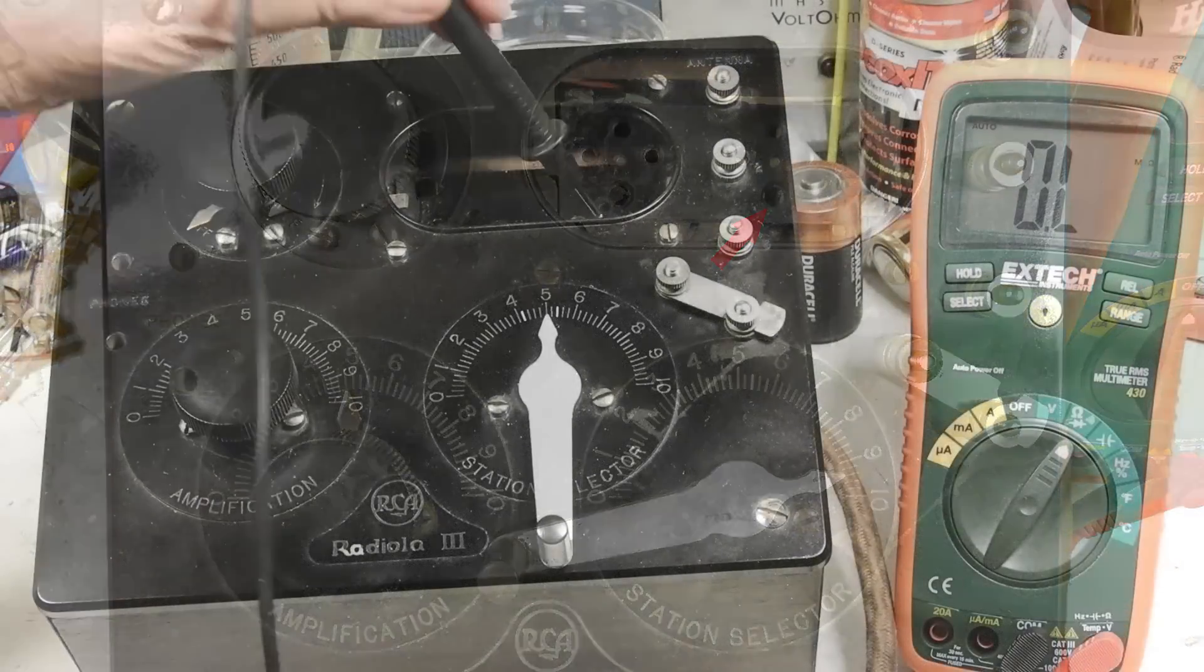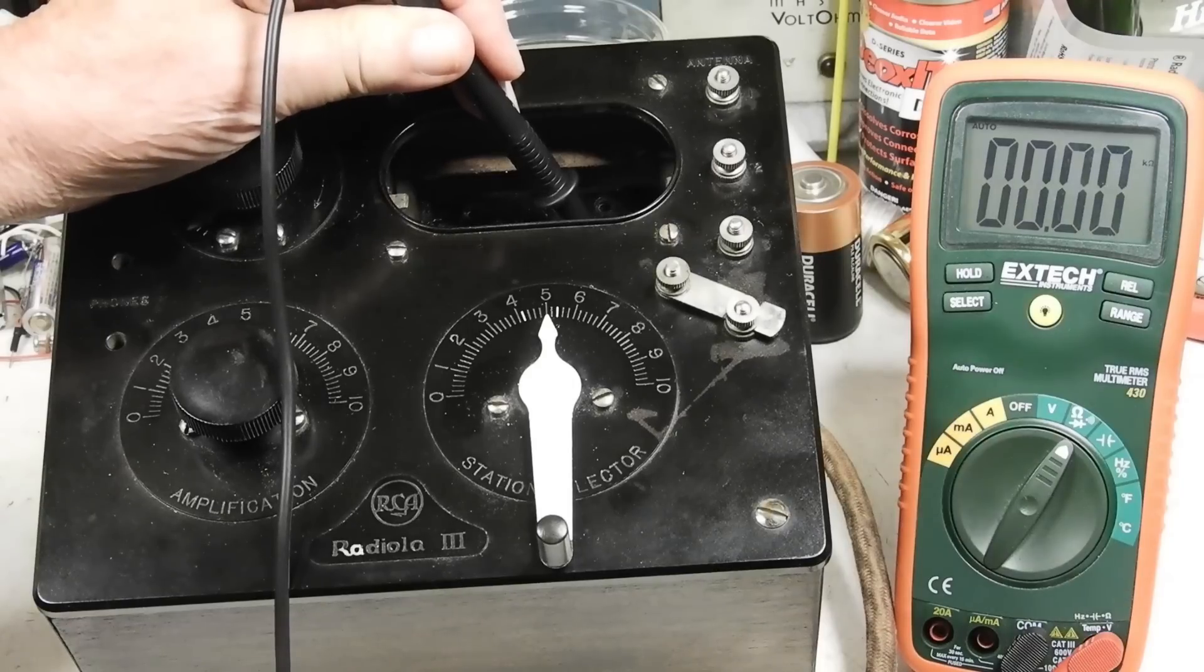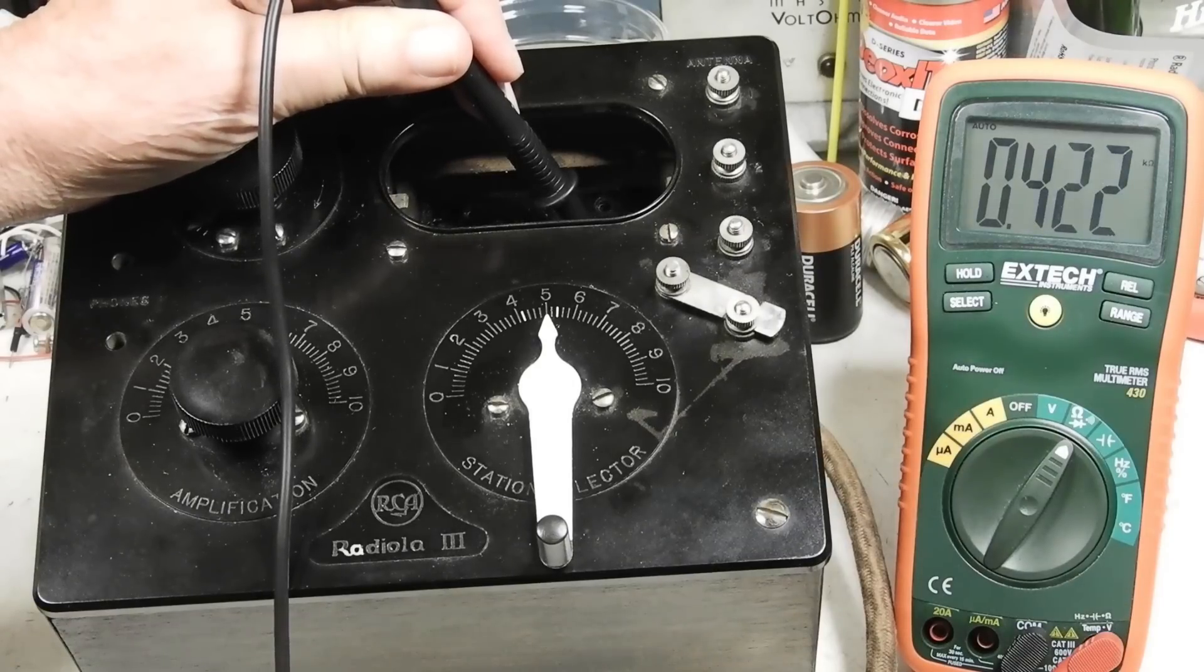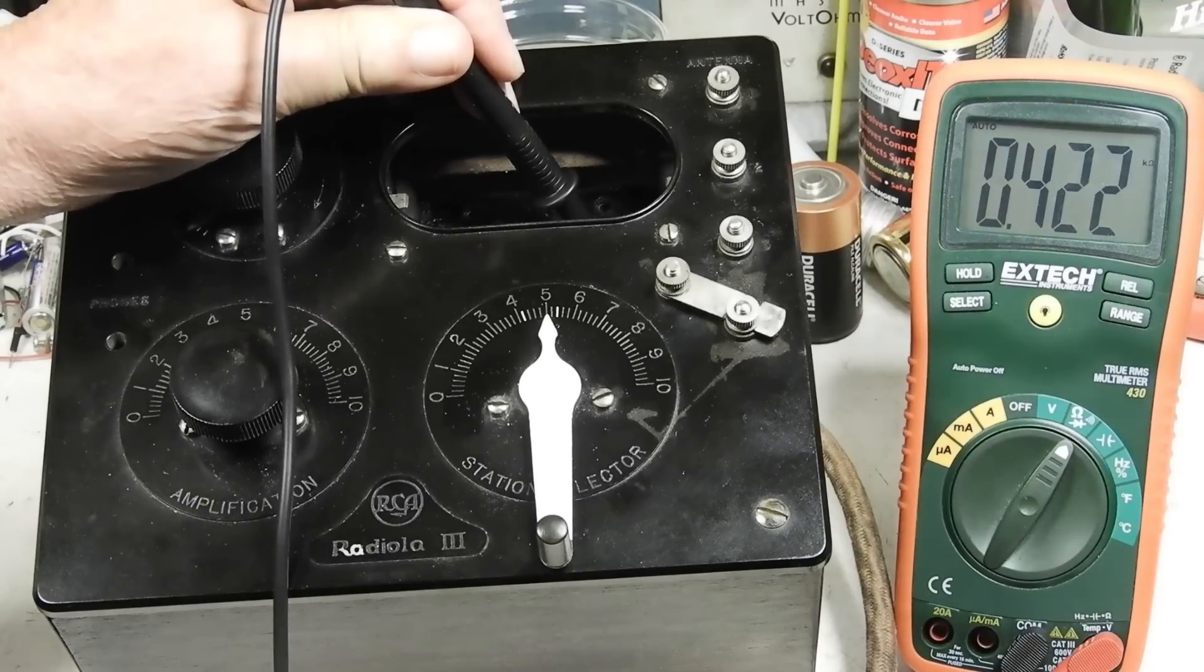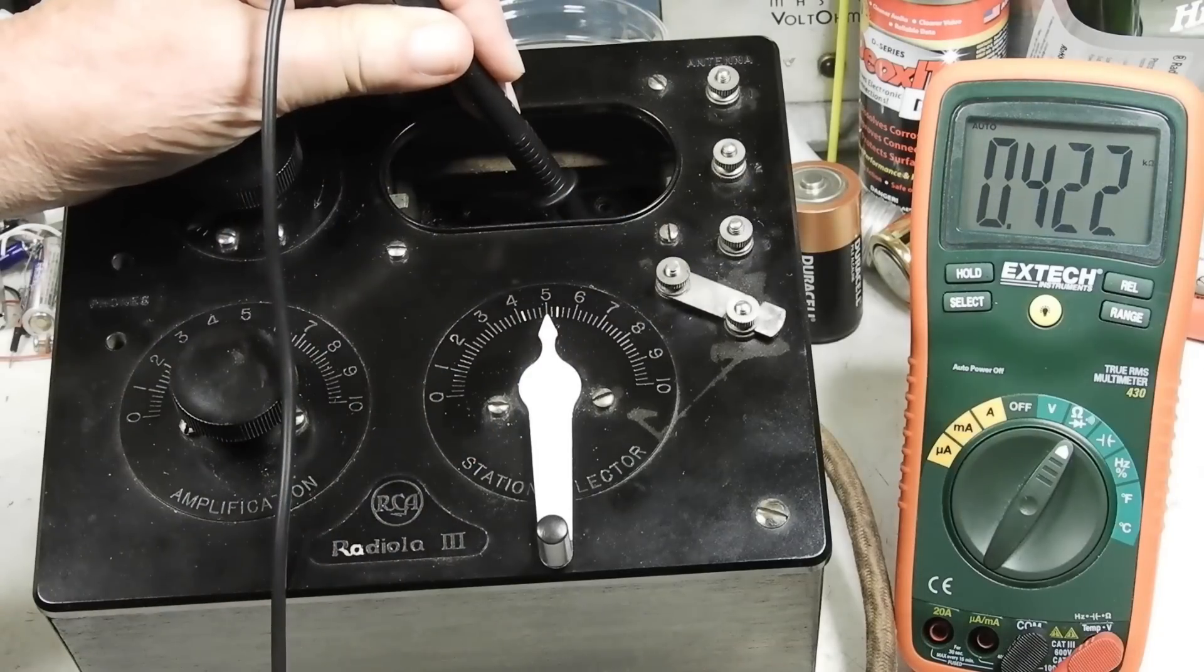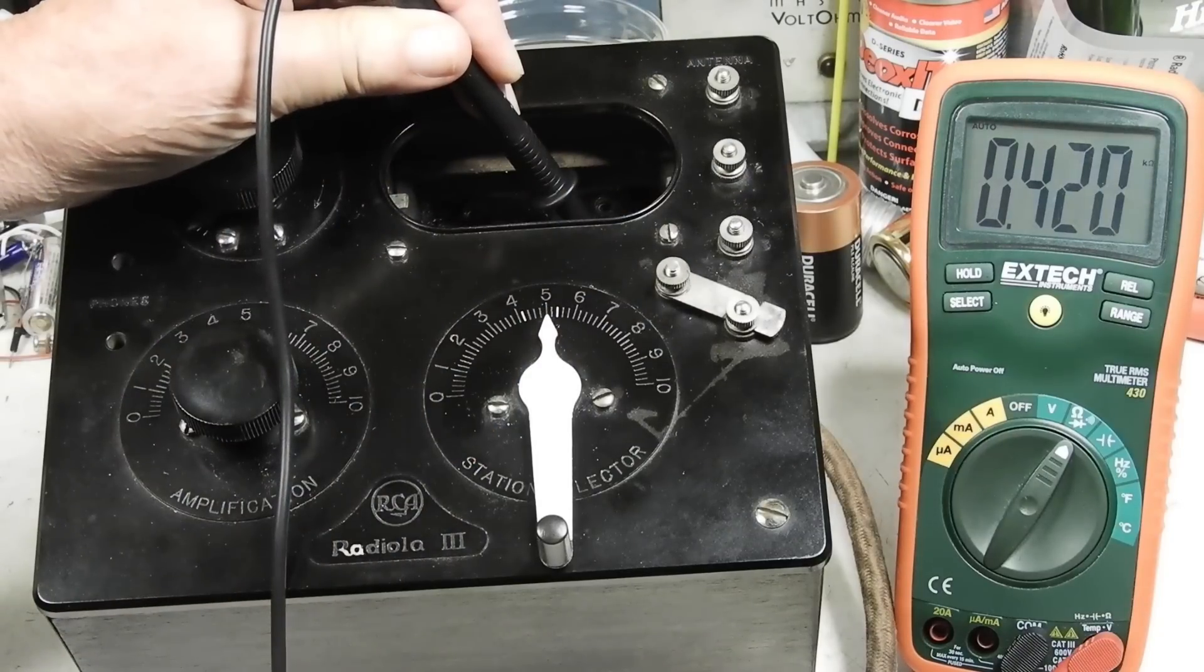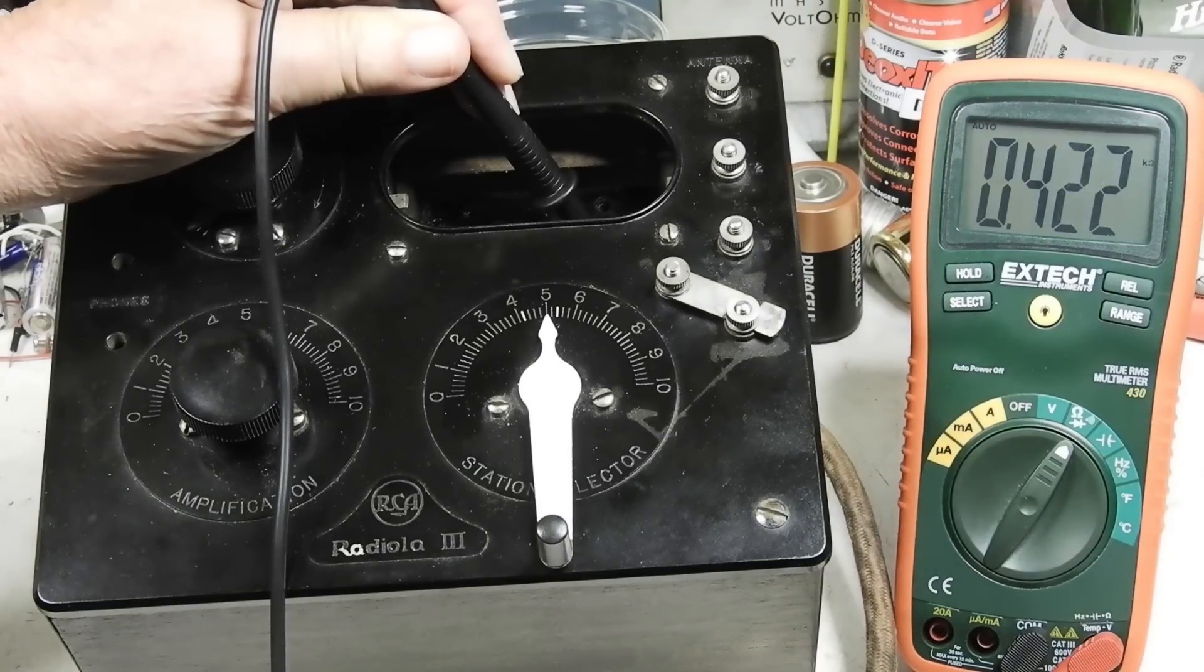So the plate is the big pin here, and we got ohms here. This one is about 400 ohms. That's good.